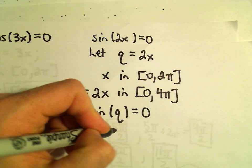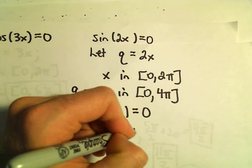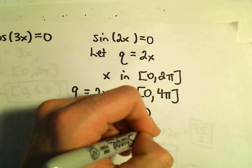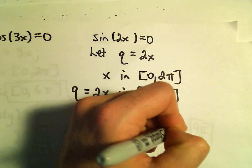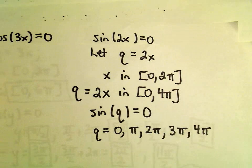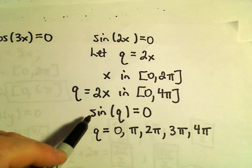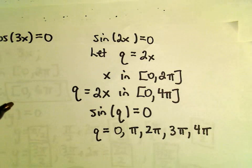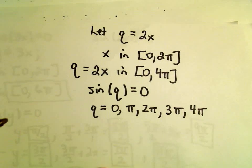Well, this would happen at the angle 0, π, 2π, 3π, and also at 4π. All of those angles, sine of all of those angles, will give us 0. And I'm going to have to do the same thing.